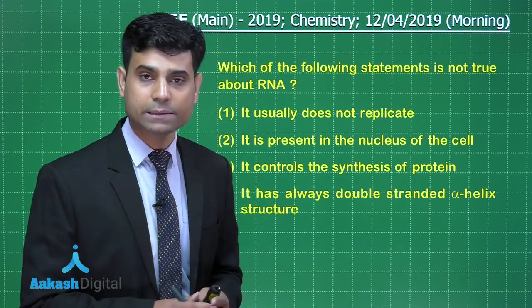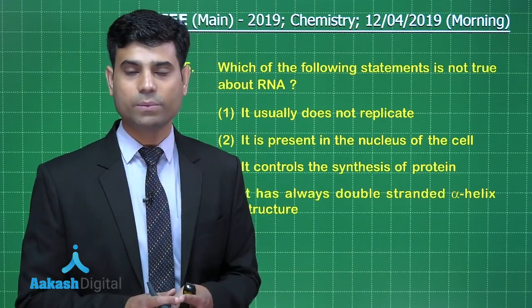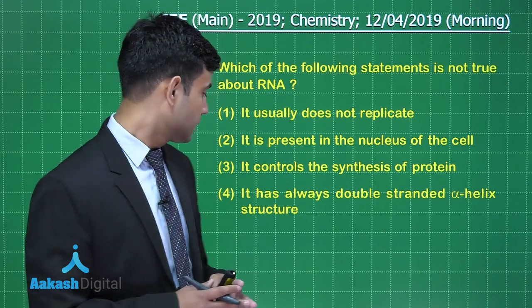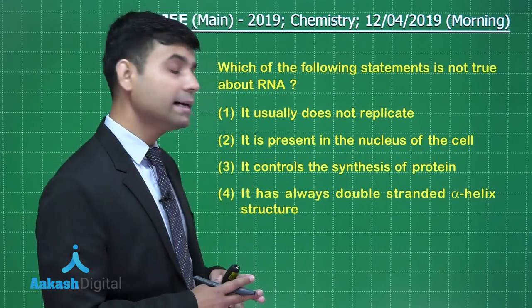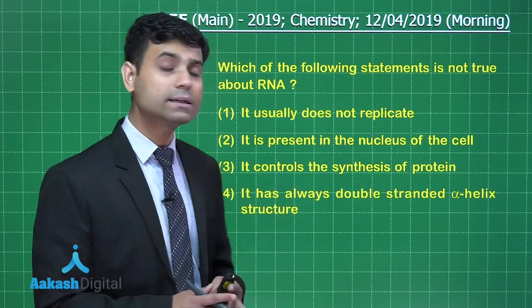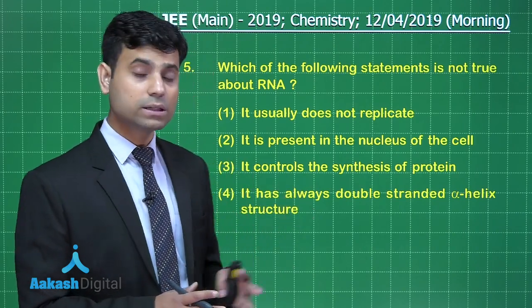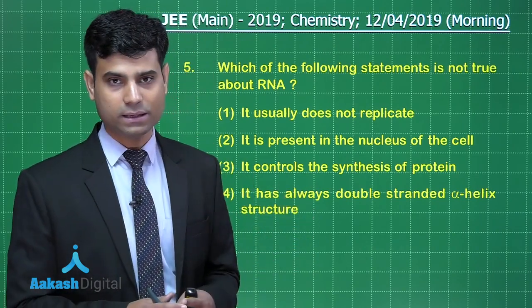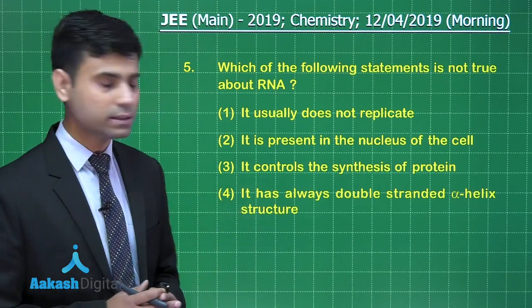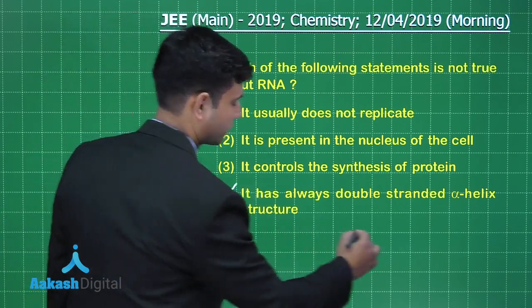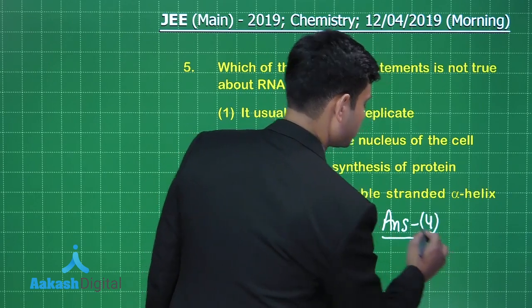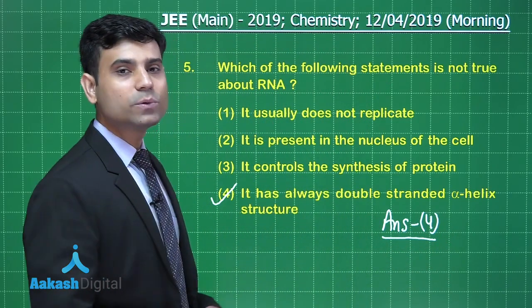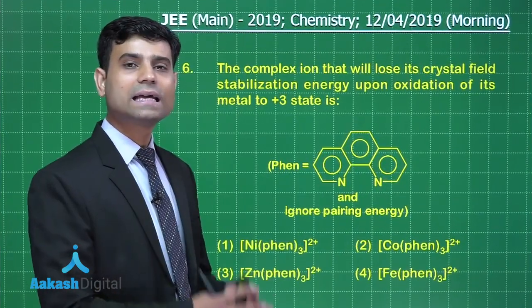Students, if I talk about first three statements, these are correct. But if I talk about the fourth statement, RNA has single-stranded structure. On the other hand, DNA has the double-stranded structure. So this is a wrong statement. Hence the correct answer for the given question is option 4.